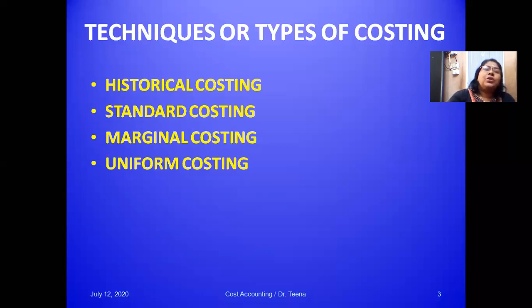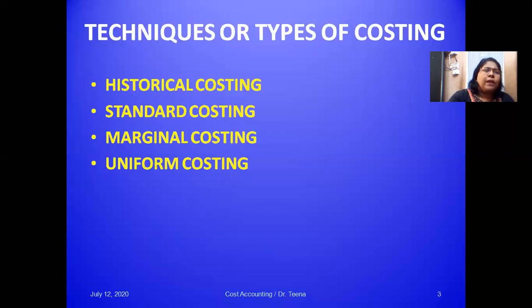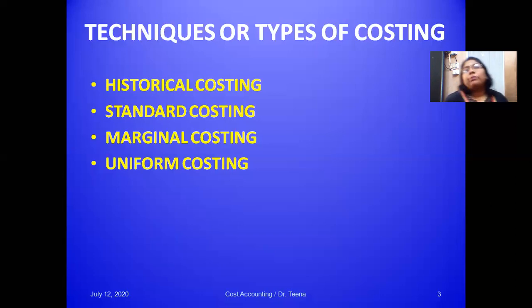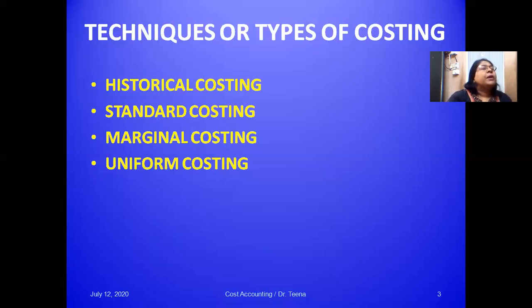In standard costing, we set estimations, standards, or targets fixed well in advance. These standards are then compared with the actual figures, and any variances or deviations are analyzed to find the reason — whether it is favorable or unfavorable to the company. Standard costing ensures that costs are under control and improves the overall performance of the company.